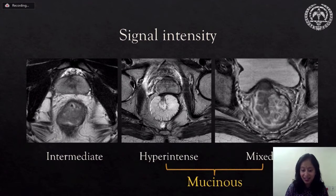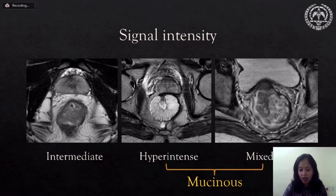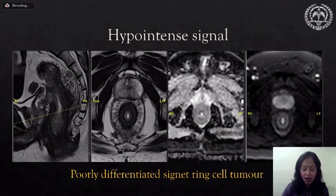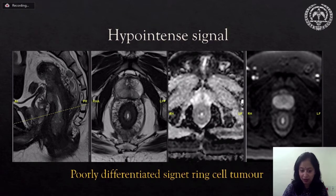The signal intensity of the rectal growth tells us about the histological type of rectal cancer. Intermediate signal intensity is most commonly seen in well and moderately differentiated rectal adenocarcinomas. Hyperintense and mixed signal intensities are usually seen in mucinous rectal cancers. Diffusion-weighted images demonstrate that signet ring cell rectal cancers do not show restricted diffusion and are thus less useful in evaluating these patients.